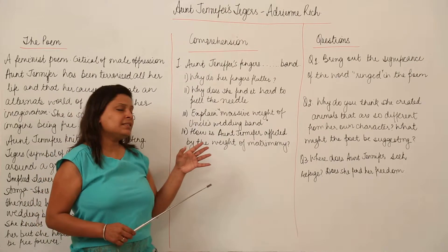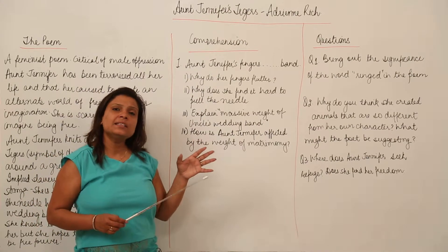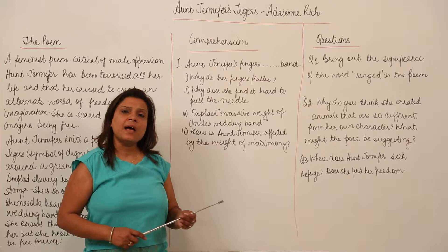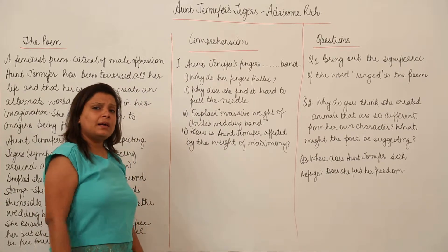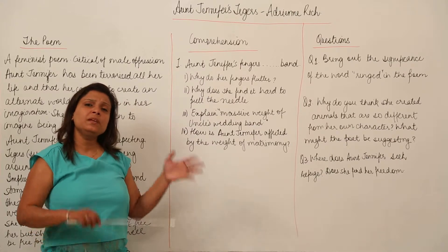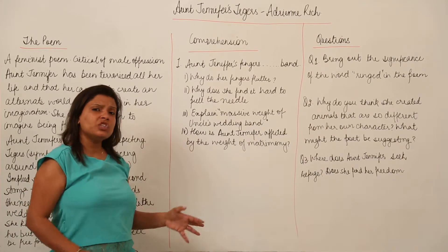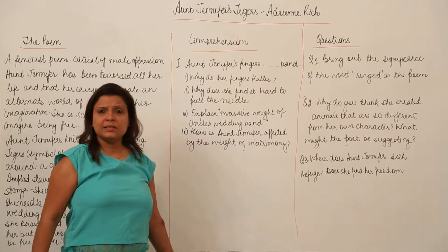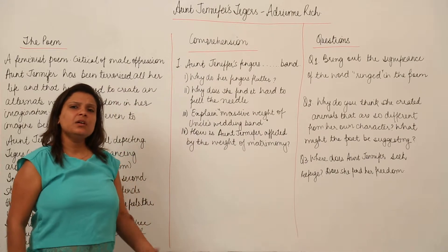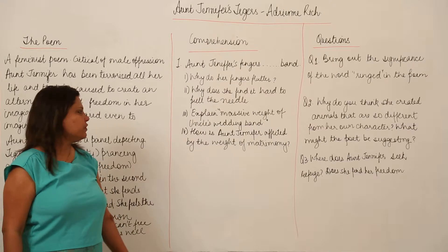And that weight is that symbol, that ring is a symbol of how after marriage she has been weighed down by him, weighed down by being his slave, probably being oppressed, being tortured and she is totally weighed down. Her personality has been finished and she yearns for freedom, but she cannot achieve it.